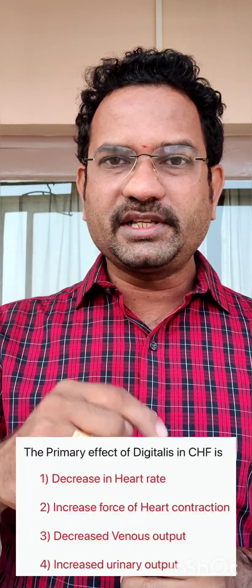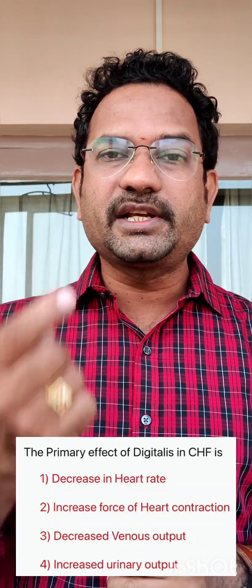In a second way, heart rate is reduced, meaning oxygen demand and energy demand of the heart are reduced. With reduced energy demand, the heart can pump more blood, increasing cardiac output. Option three says decreased venous output, meaning decreased cardiac output — but digitalis actually increases cardiac output. This is how you need to understand this topic. Thank you for watching.